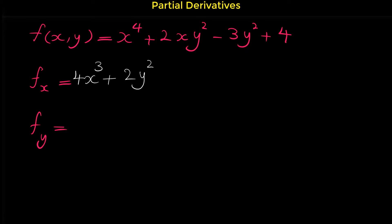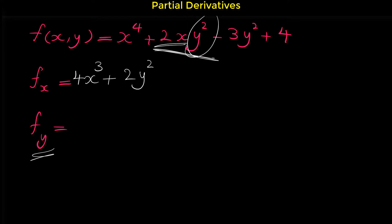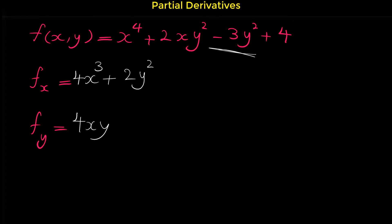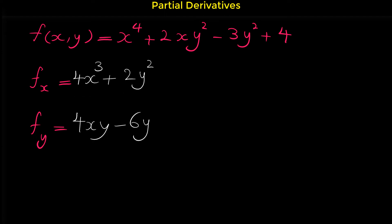For the partial derivative with respect to y: the derivative of x⁴ is 0 since there is no y. For 2xy², y² is the variable part and 2x is the coefficient. We write 2x and take the derivative of y², which is 2y, so the derivative of 2xy² is 4xy. The derivative of negative 3y² is negative 6y, and the derivative of constant 4 is 0. So f_x equals 4x³ plus 2y², and f_y equals 4xy minus 6y.